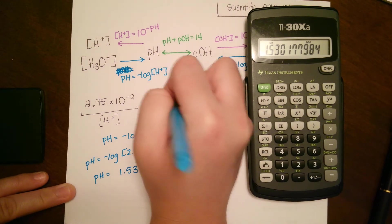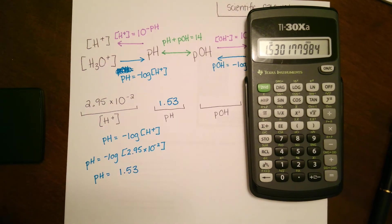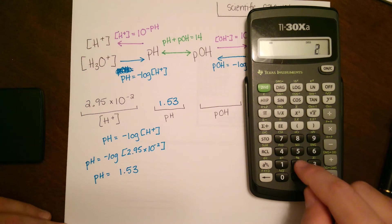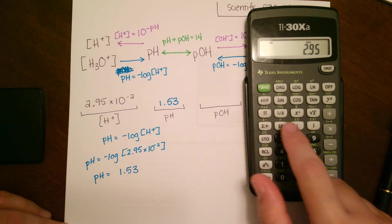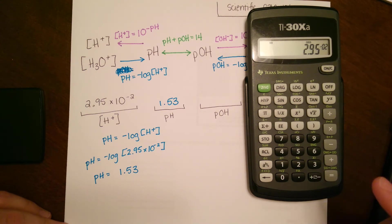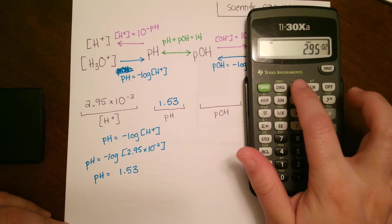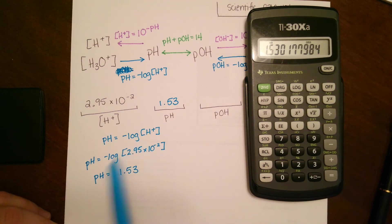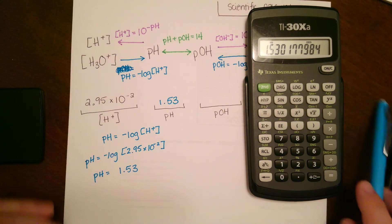I'm going to do that one more time. Type in the number first: 2.95, EE for times 10 to the, negative 2. If you don't press enter, you'll still get the same thing. You'll press log from there, and then negative, because it's always going to be the negative log. Everything is a little bit shuffled for this. You still get 1.53.